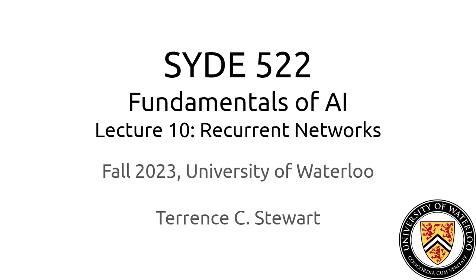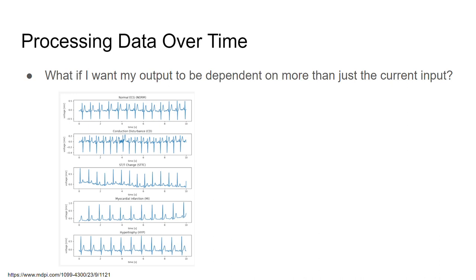What do we mean by recurrent networks, and what's the core task? There's one fundamental issue with all of the neural networks — indeed all the systems we've talked about so far in this course — and that is their output is dependent on their input right now. There's no sense of time, no sense of whether some pattern is coming into the network over time. The output is always purely a function of the current input. And that's an interesting limitation.